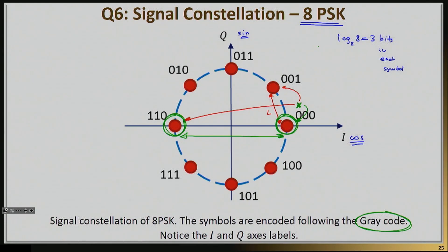For example, you can see here that I have assigned the bits 0, 1, 1 to the symbol here, and this 0, 0, 1 to this symbol.